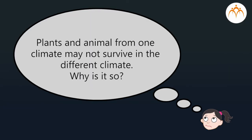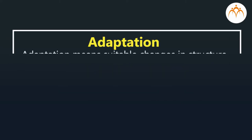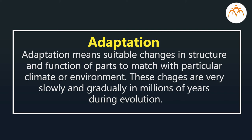This means plants and animals from one climate may not survive in a different climate. This is because of lack of adaptation. Adaptation means suitable changes in the structure and function of parts to match a particular climate or environment. These changes have taken place very slowly and gradually over millions of years during evolution.